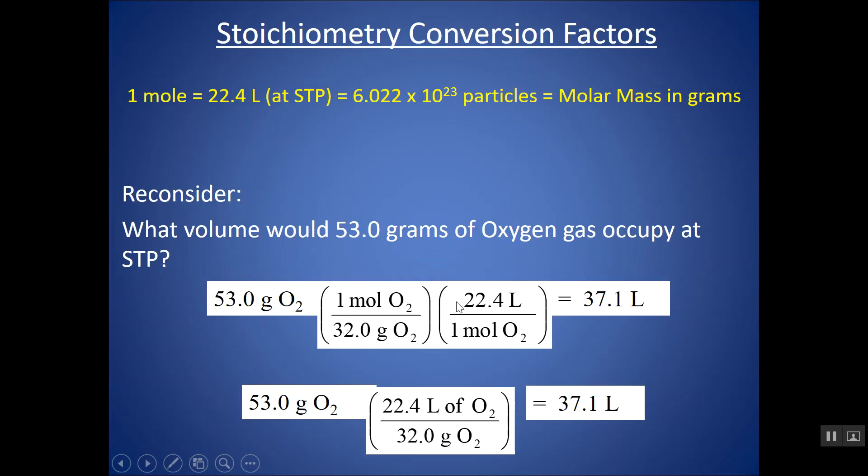And I just wanted to show you on that last problem. If you wanted to, since all these things are equal to each other, instead of doing this in two conversion factors, if you wanted to, you could say, 22.4 liters is also equivalent to the molar mass in grams. So I can just do one conversion factor, put the molar mass in grams on the bottom, since grams need to cancel out, and put the 22.4 liters on top, since I want to end in liters. And notice it's the exact same calculation as before.